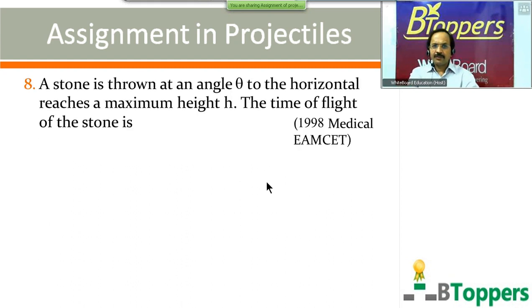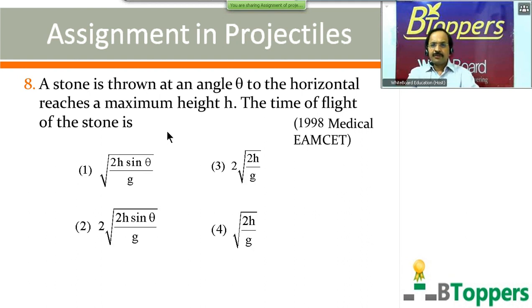Question number 8: a stone is thrown at an angle theta to the horizontal and reaches a maximum height h. The time of flight of the stone is — four options are shown on screen. This question was given in one of the previous MSET exam papers in the medical entrance, approximately 1998. Come on, try the question.